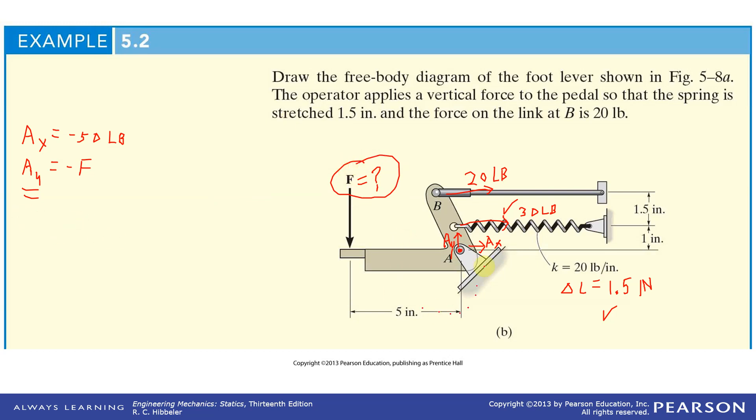We have a counterclockwise moment of five inches times F, and we have a clockwise moment of 30 times one plus 20 times two and a half. Minus 30 times one is 30, minus 20 times two and a half is 50. That would be inch-pounds. The units would be inch-pounds of moment, pounds and inches.